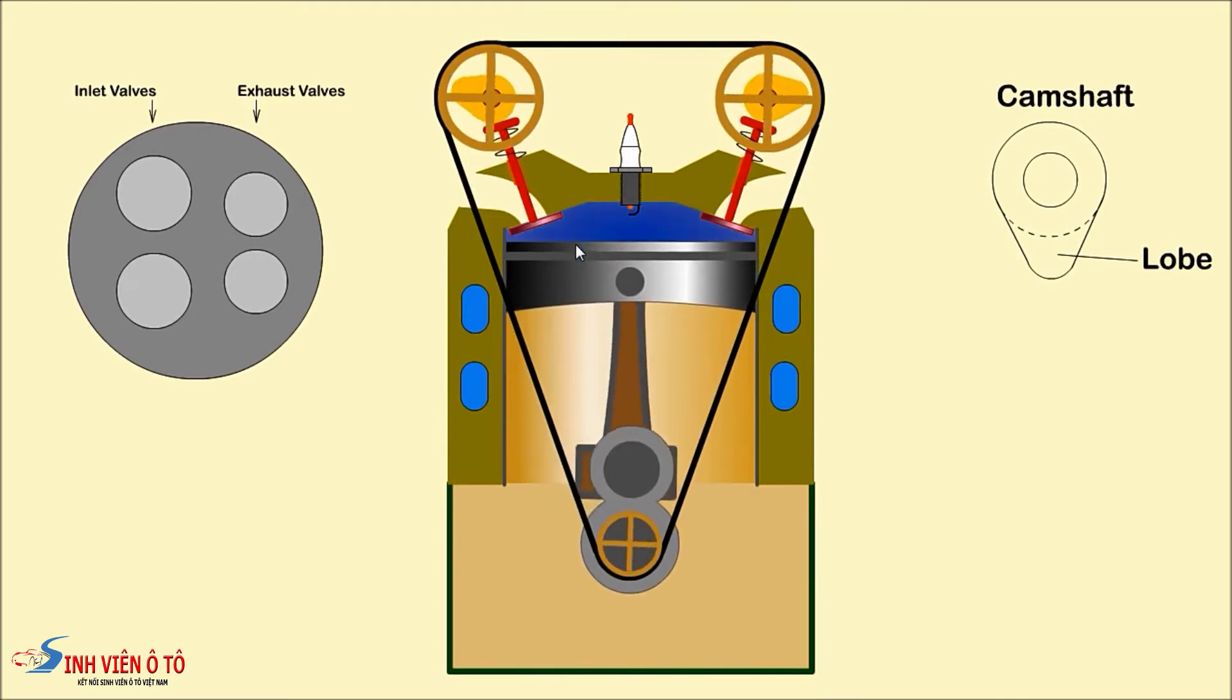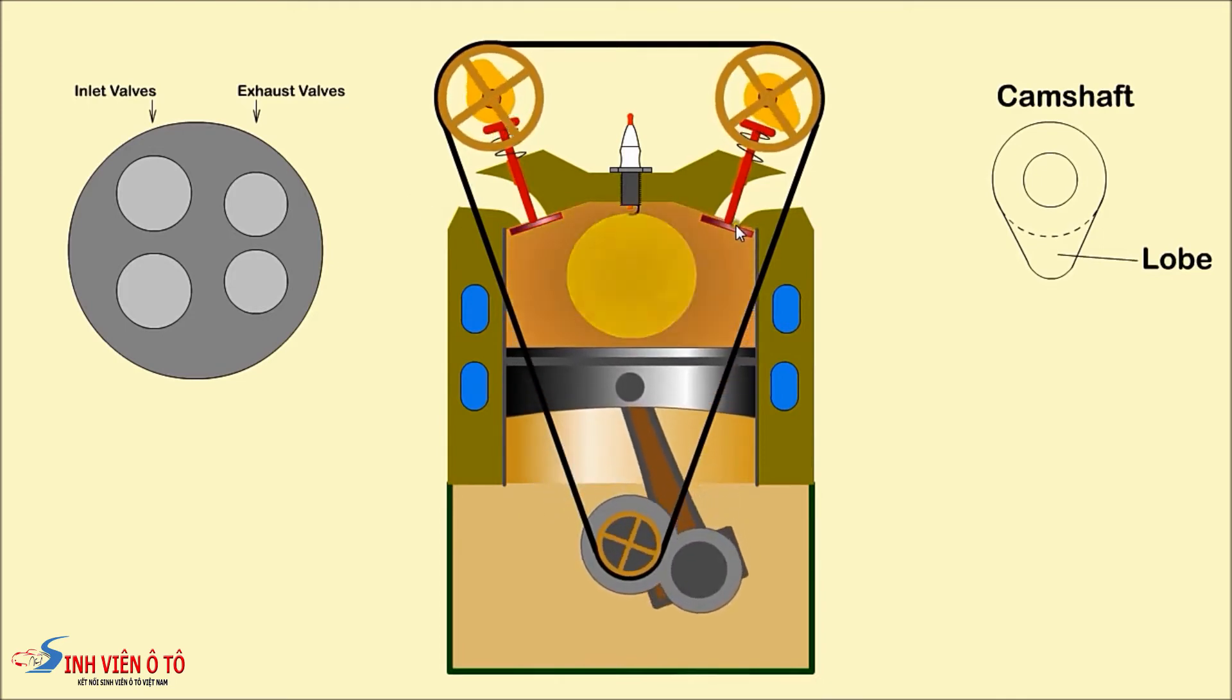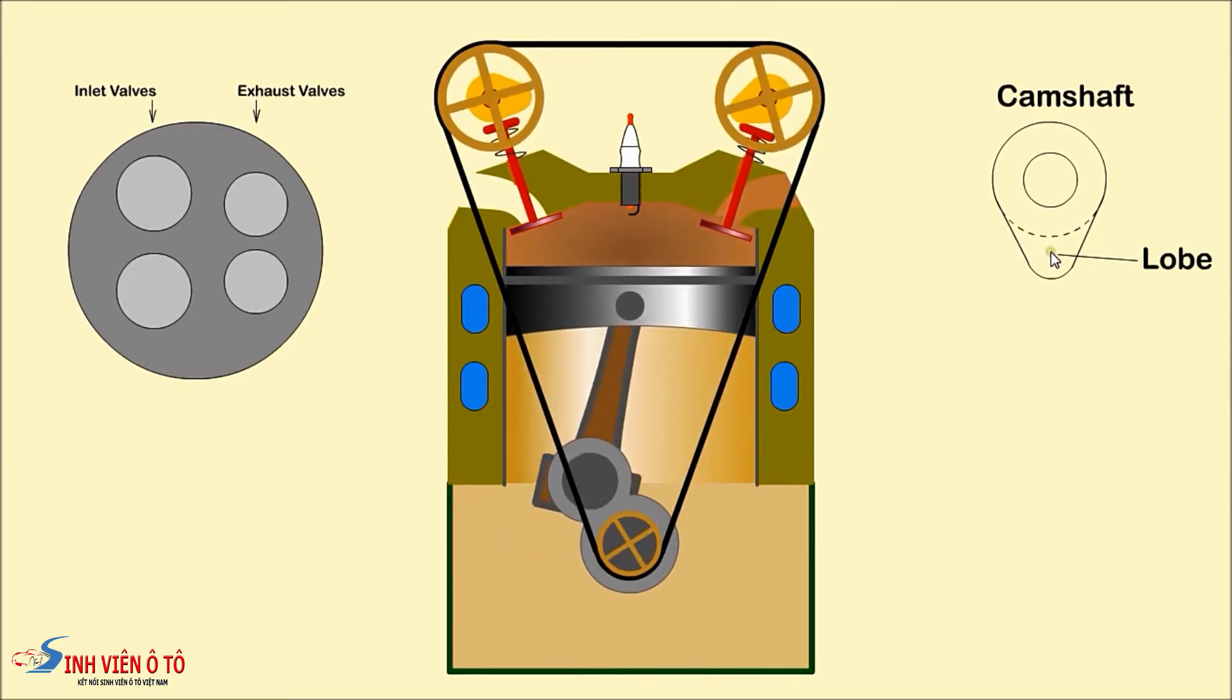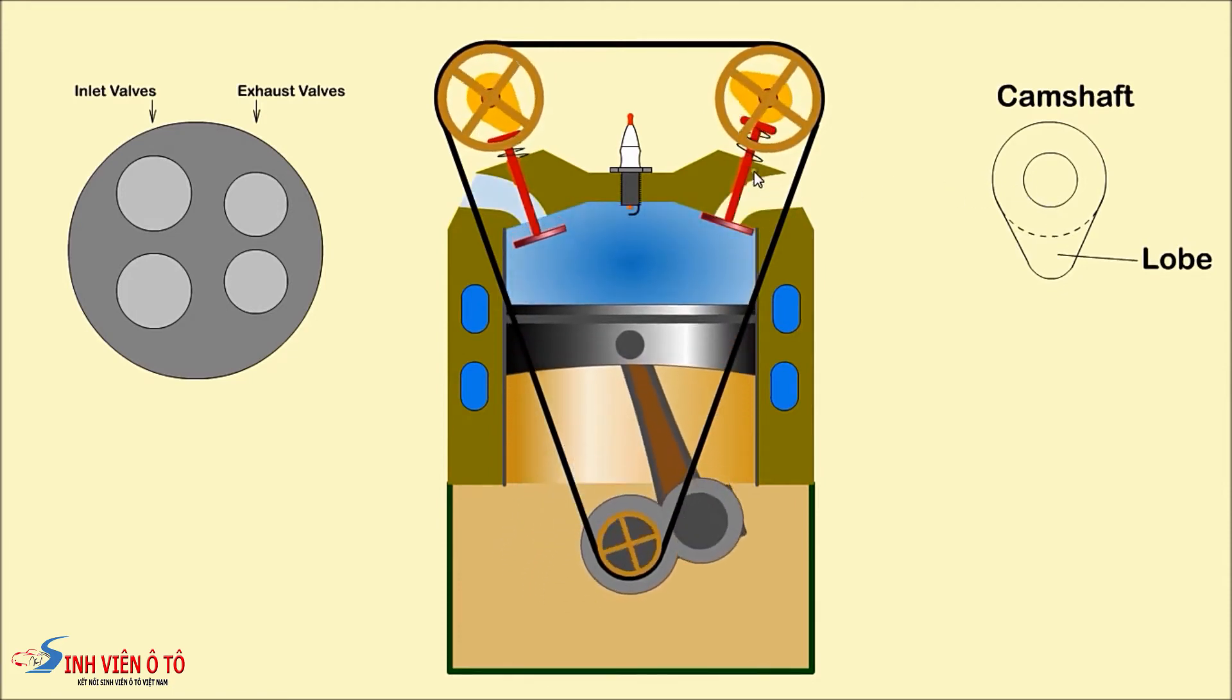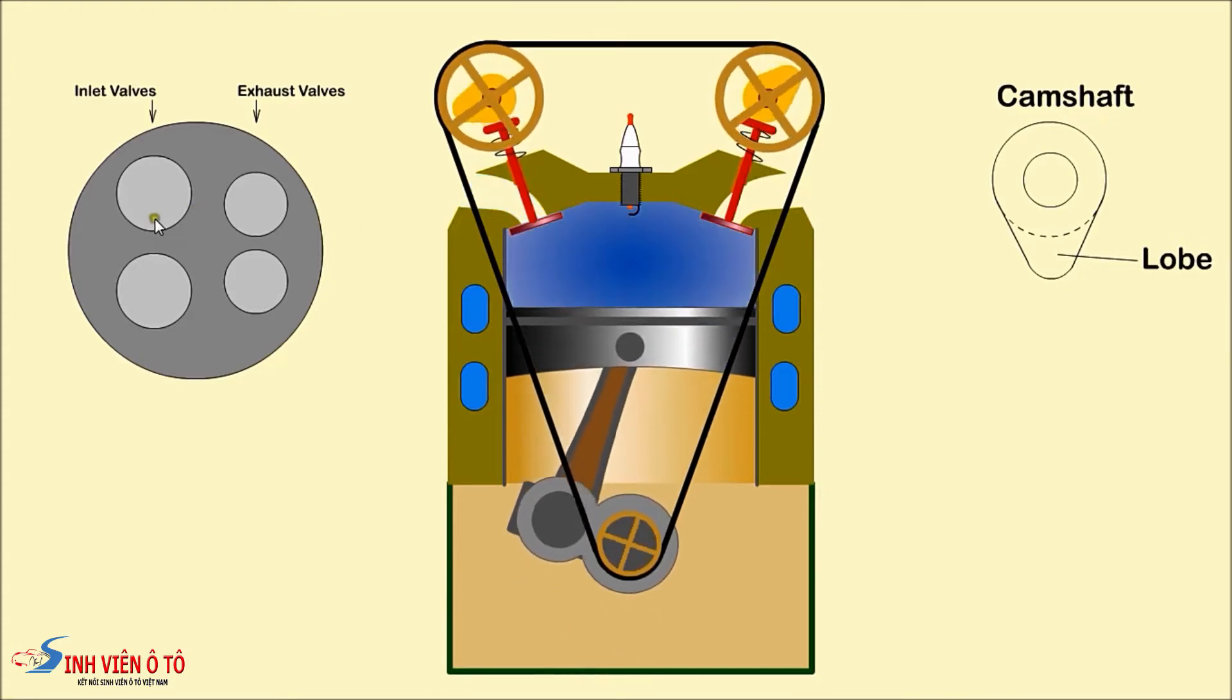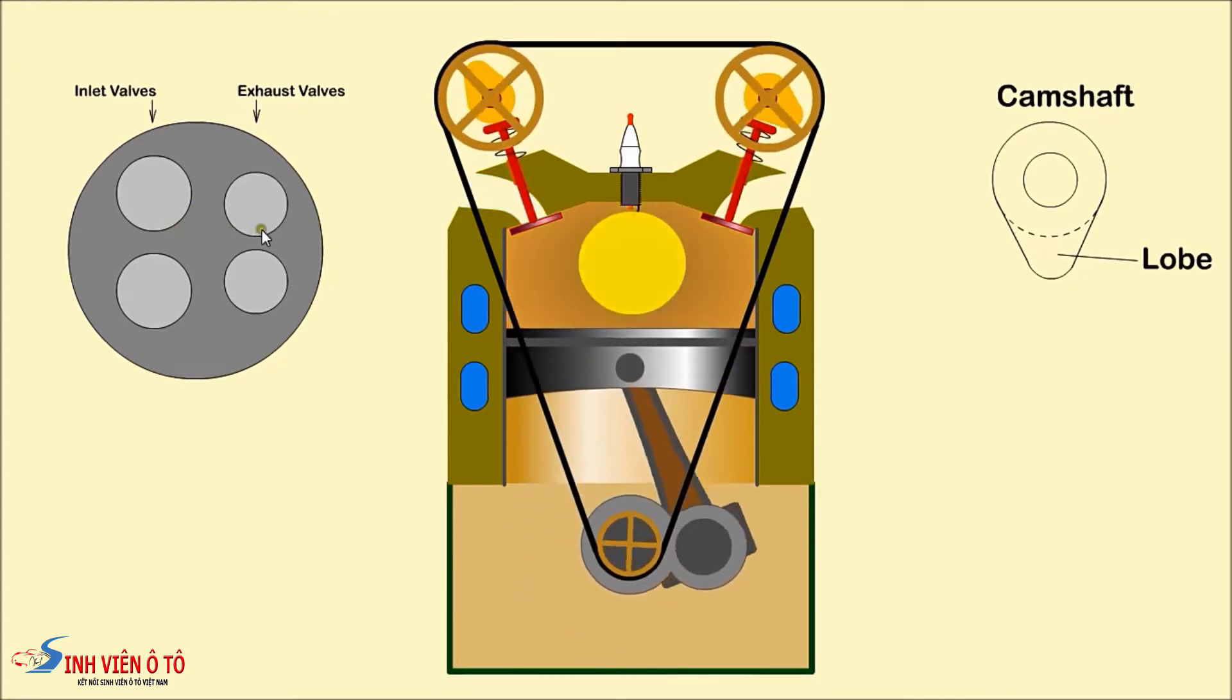Valves are used to allow air to enter and exhaust gas to exit from the cylinder. They are opened by the lobe on the camshaft and closed by spring pressure.